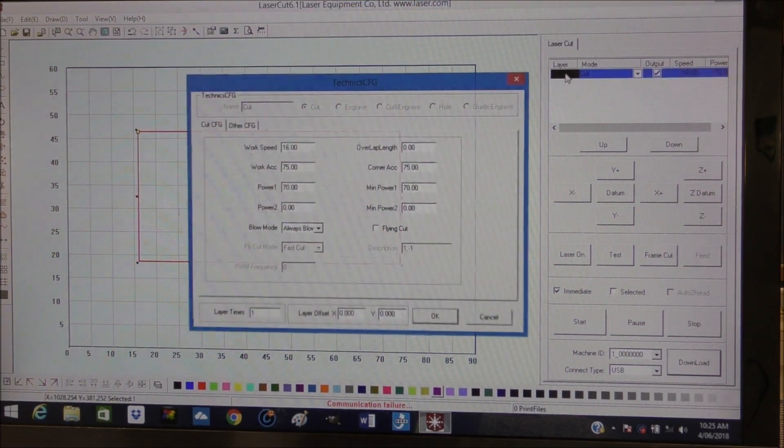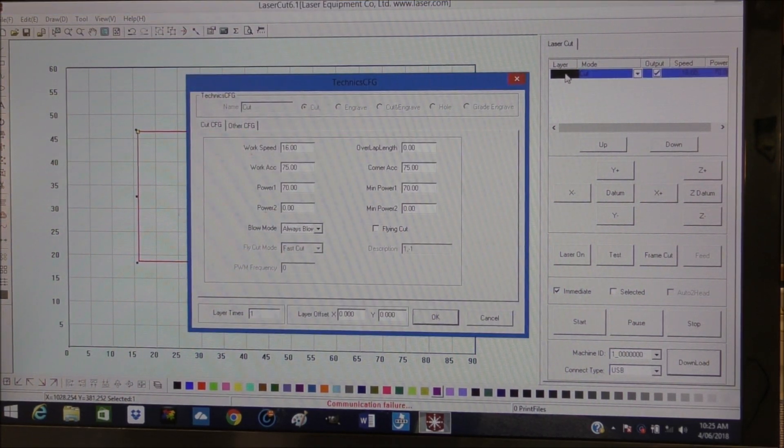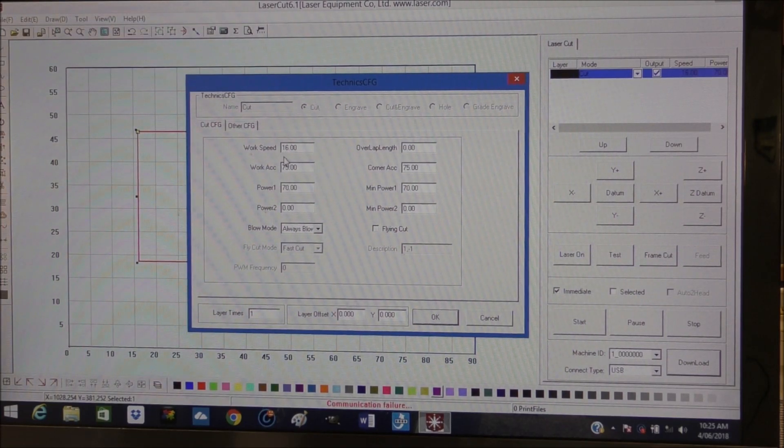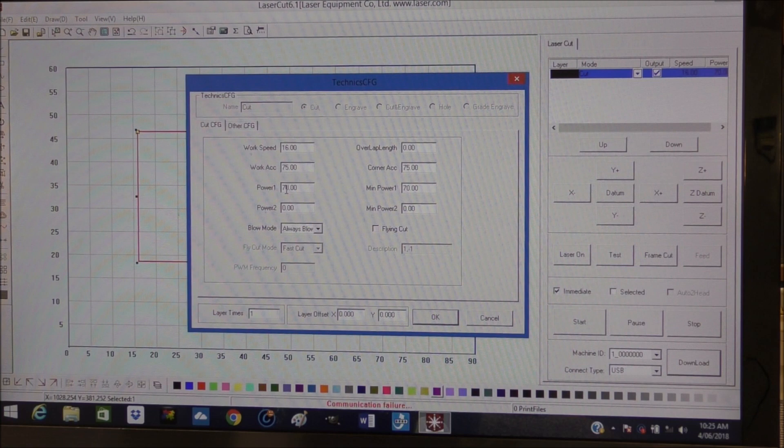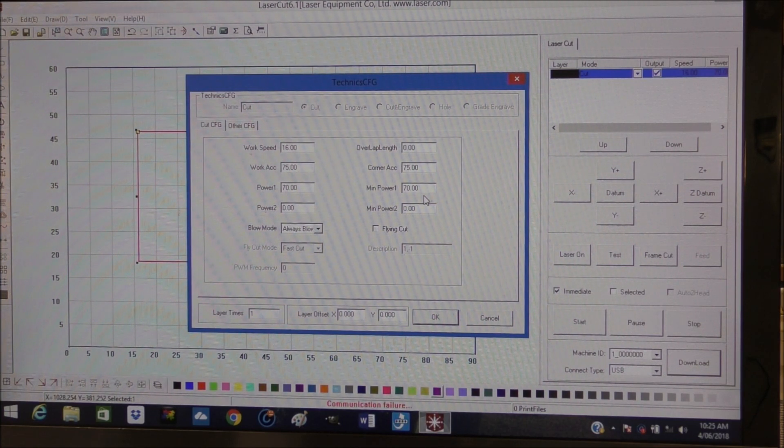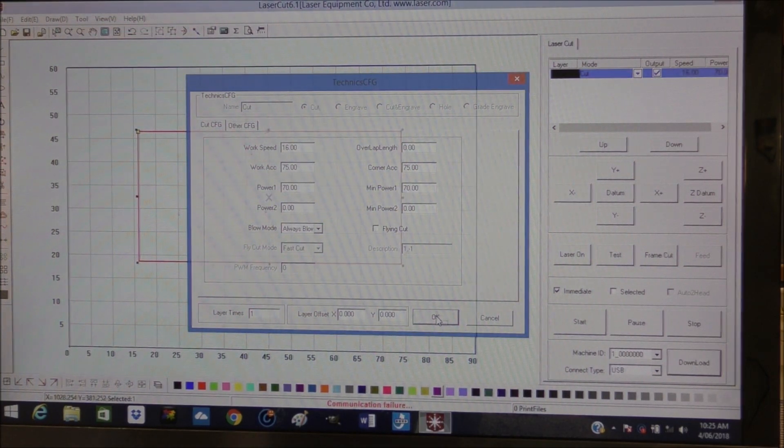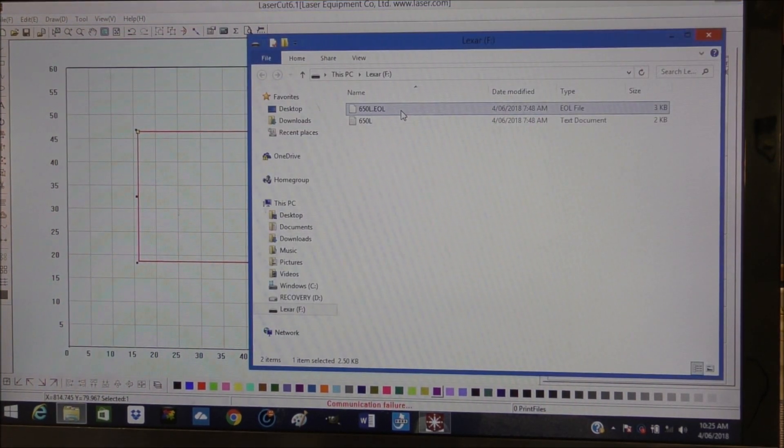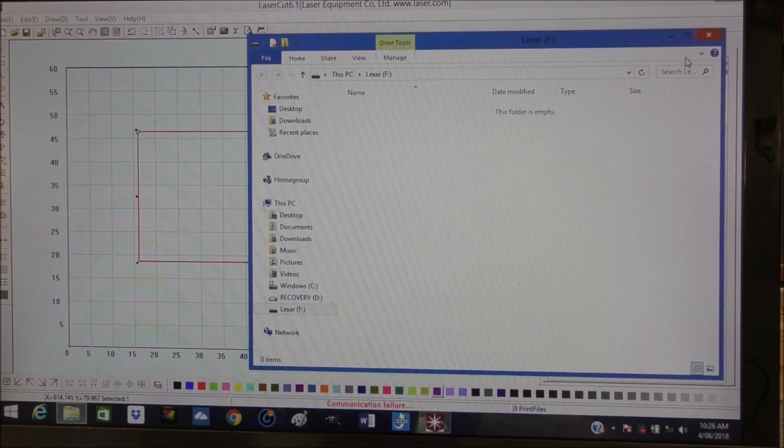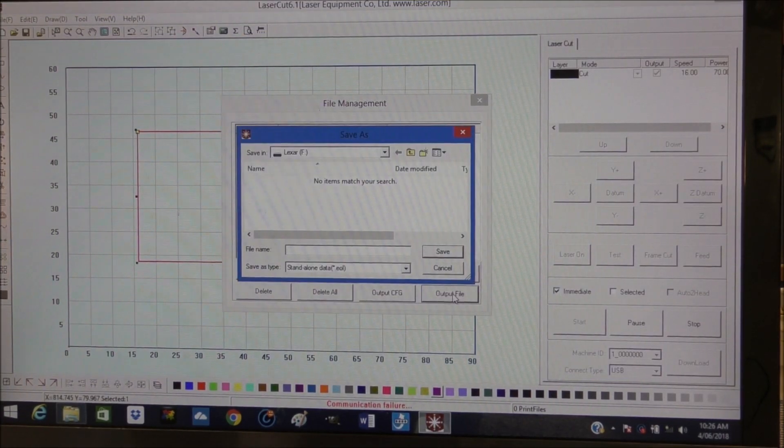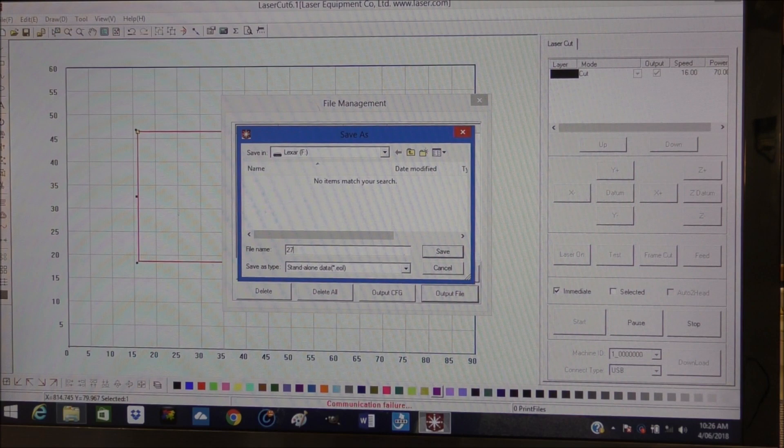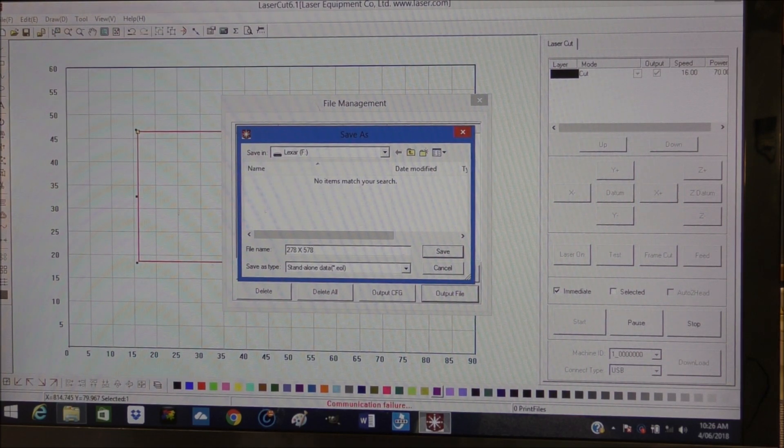The next thing to do is to select the cut mode and fill in this dialog box. I've actually pre-filled this in to 18 millimeters per second, 75% power of the laser, then 75% in corners, and run the laser along the straight at 70%.